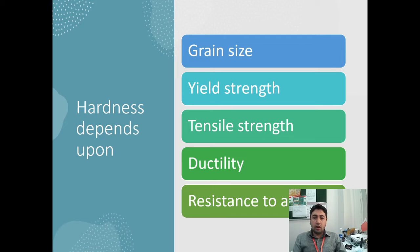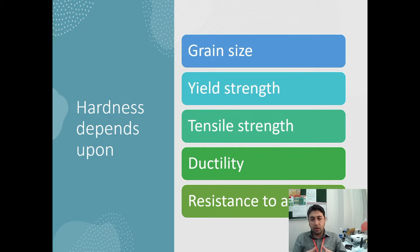Hardness also depends on the grain size, yield strength, tensile strength, ductility, and resistance to abrasion. If we have a material of high tensile strength, the hardness number should be different compared to a material having low tensile strength. So it depends on these properties as well.